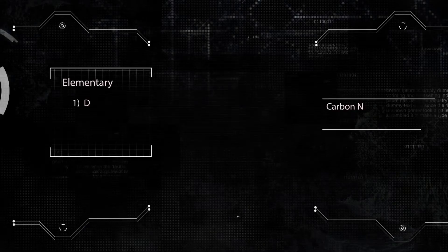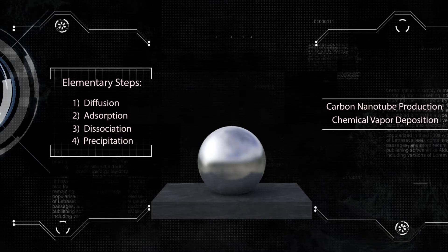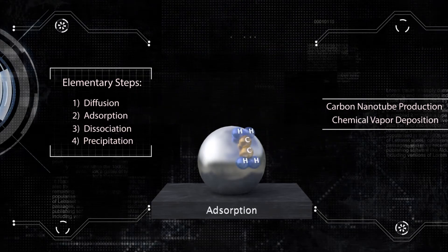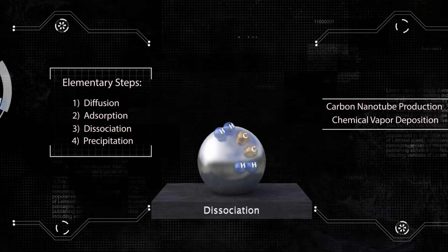The most common carbon nanotube production method is chemical vapor deposition. Elementary steps of the carbon nanotube growth process are diffusion, adsorption, dissociation, and precipitation.